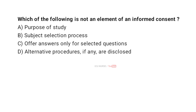Which of the following is not an element of an informed consent? A. Purpose of study. B. Subject selection process. C. Offer answers only for selected questions. D. Alternative procedures if any are disclosed. And the correct answer is C. Offer answers only for selected questions.